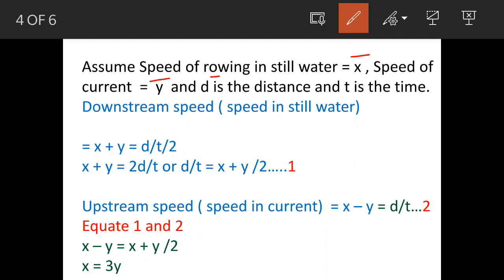When the boat is going downstream, the speed will be x plus y. We know that speed equals distance upon time, so x plus y equals d divided by t/2, because it is taking half the time. When you solve this, we get d/t equals (x+y)/2. This is our equation 1.